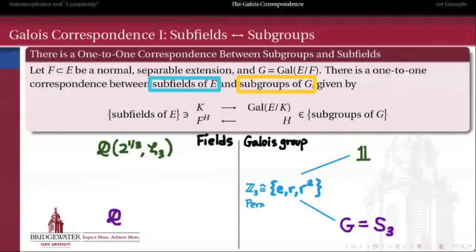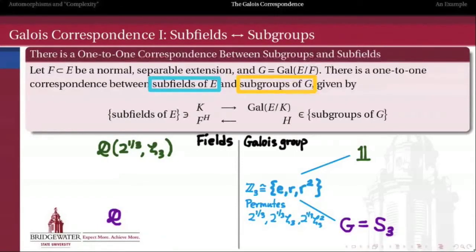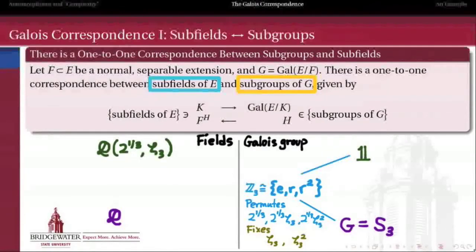Now let's look at the in-betweens. The subgroup of S3 consisting of elements of order 3 — the three-cycles — is an index-2 subgroup of S3. Its action as automorphisms permutes the various cube roots of 2 in the splitting field, so 2^(1/3) gets permuted with its conjugates 2^(1/3)·ζ₃ and 2^(1/3)·ζ₃². The fixed field corresponds to the elements unchanged under these permutations. Because we're rotating among the 2^(1/3) values, we're leaving the cube roots of unity in place. So any element built only out of those cube roots of unity stays put, and the fixed field associated with this subgroup is Q adjoined ζ₃.